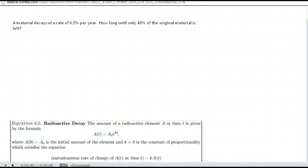All right. A material decays at a rate of 0.5% per year. There's our K. And again, we want to make sure and remember that that's going to be a negative number when we put that into the formula. How long until only 40% of the original material is left? Now, notice we have a problem here. They didn't tell us how much we had originally. They also didn't tell us time. That's what we're trying to find.